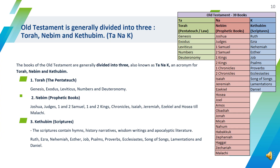In another classification of the Old Testament, the books are divided into three categories known as Tanakh — the acronym for Torah, Nabi'm, and Kethubim. The first category is the Torah of Moses, with the first five books: Genesis, Exodus, Leviticus, Numbers, and Deuteronomy.